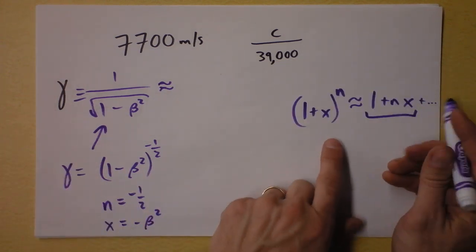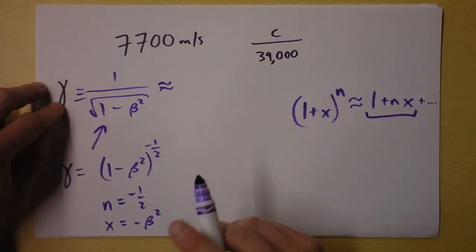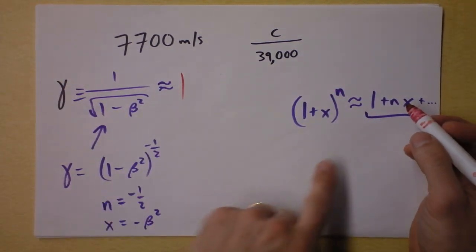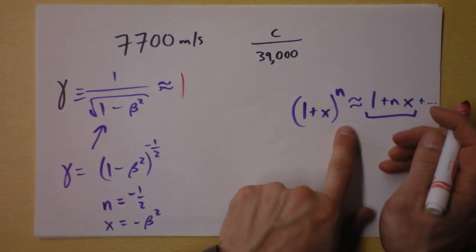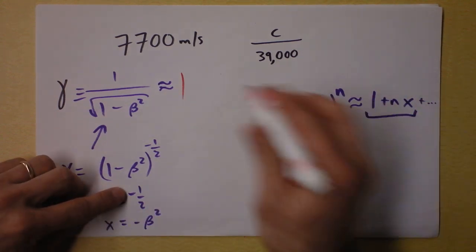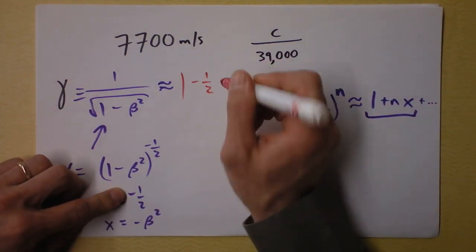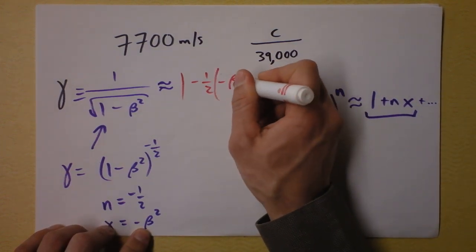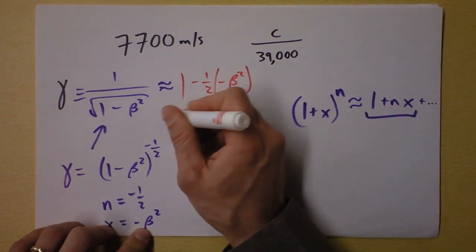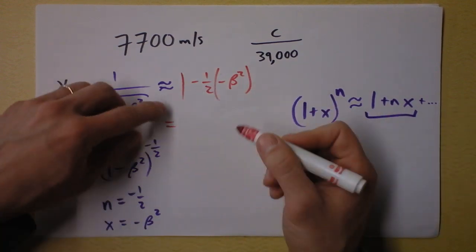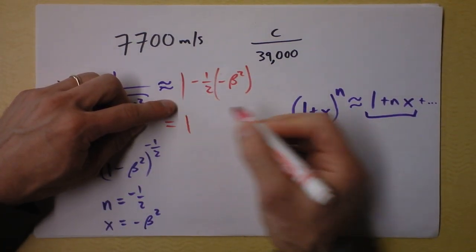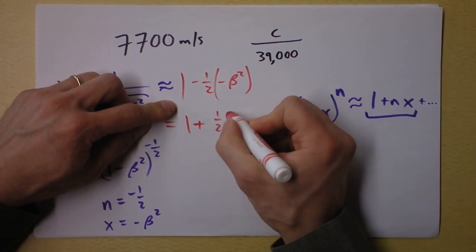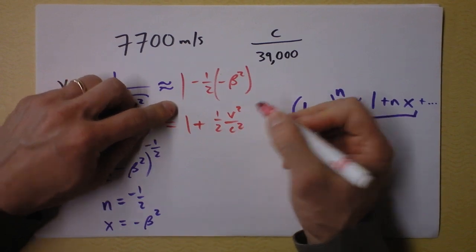It looks like this is going to, gamma is going to be about, let's go to a different color here so we have a little bit of contrast. I'm plugging in this expansion. I'm saying it's approximately 1 plus, now I need to do n, which is minus 1 half, and then I need to multiply that by beta squared with a minus sign, negative beta squared, and then I'm going to plug in what beta squared is.